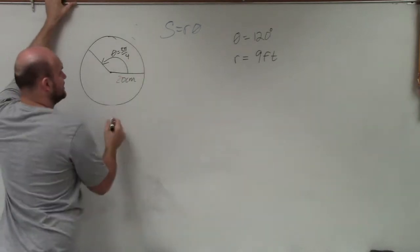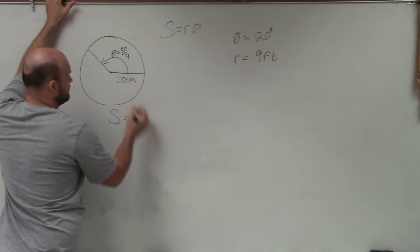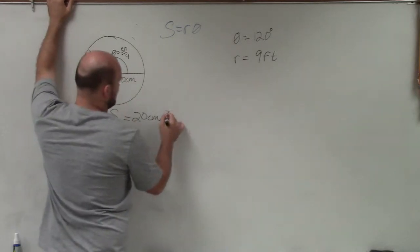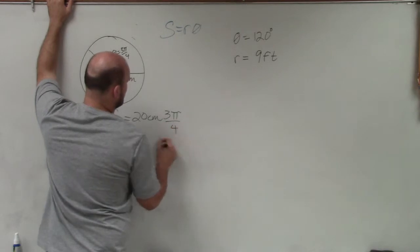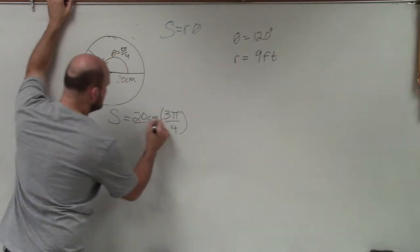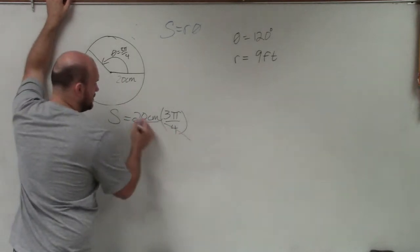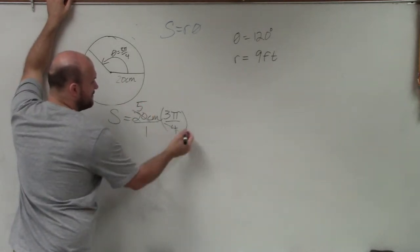So therefore, to determine the S, which would be our arc length, we're simply just going to plug in our radius times our theta. Now we're multiplying a whole number times a fraction. So I can simplify 20 over 4, I can reduce that to 5 over 1, then I can just multiply across.